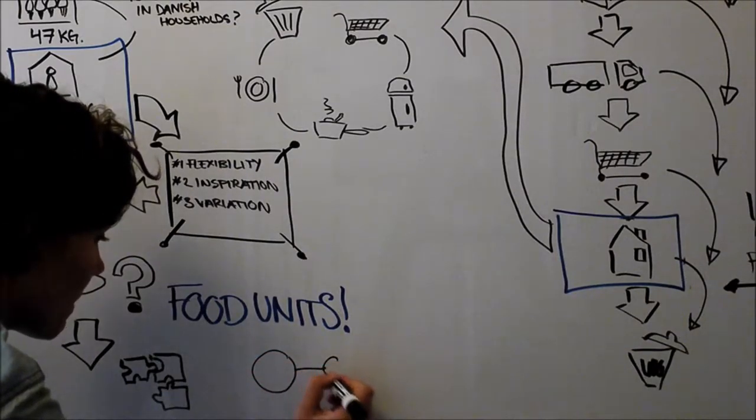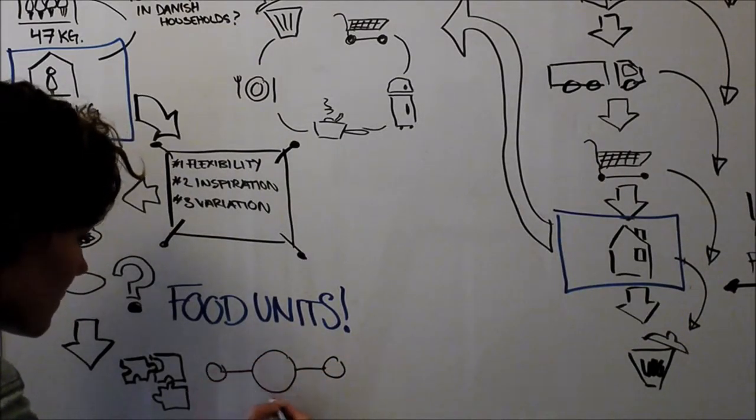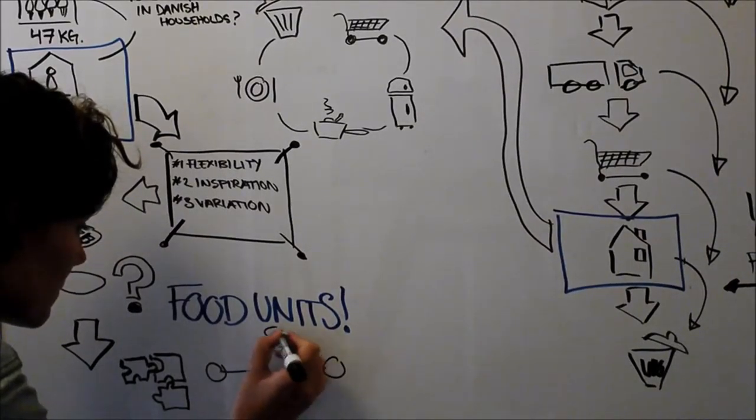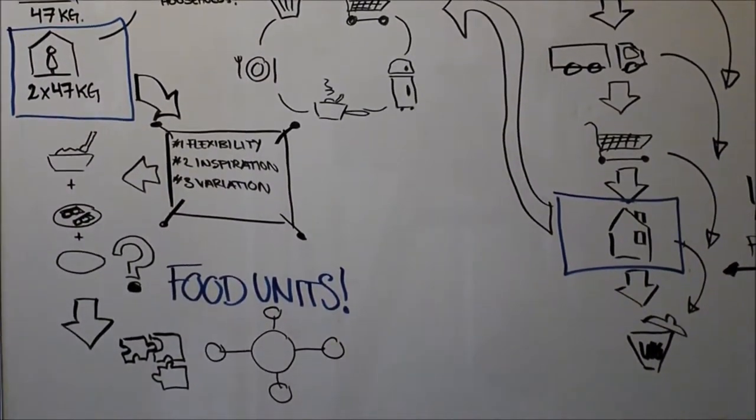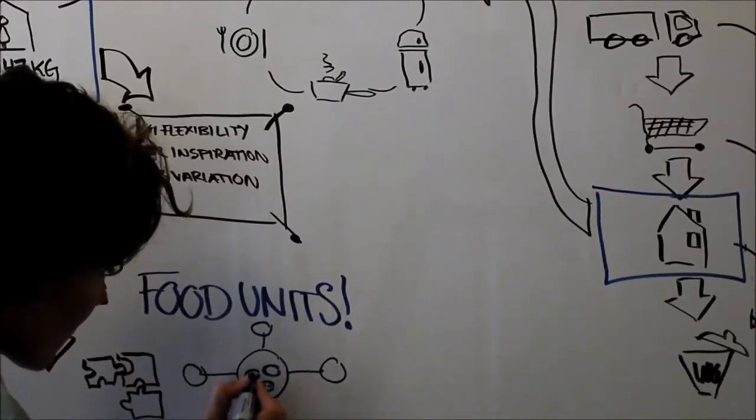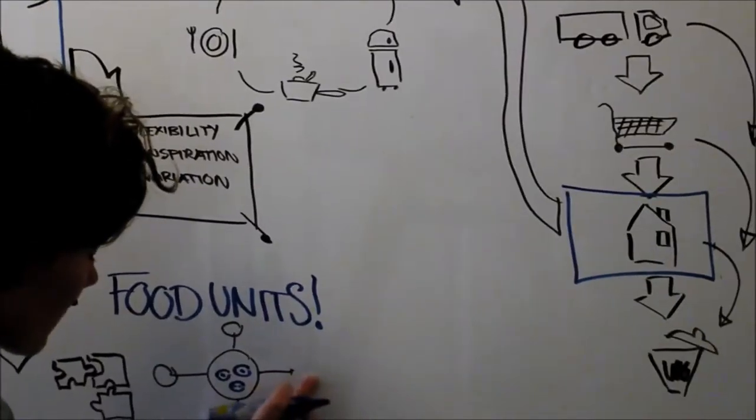What's common for all food units is that they're built up around a centerpiece with side dishes. The centerpiece is the central part of a food unit and often where the planning begins. This means seeing the centerpiece would associate you with the side dishes, but not the other way around.